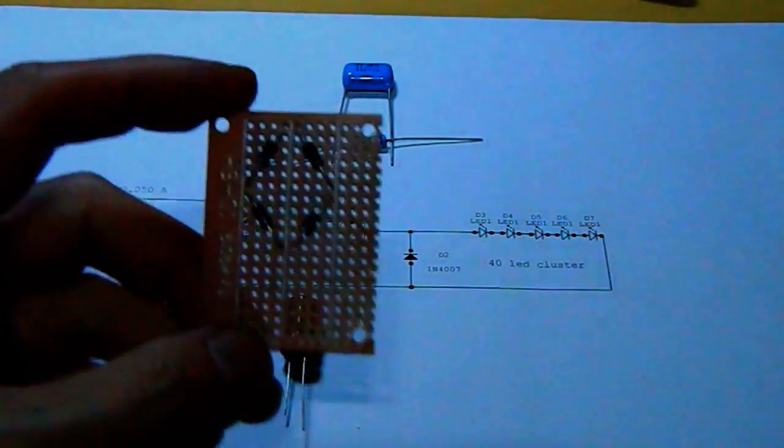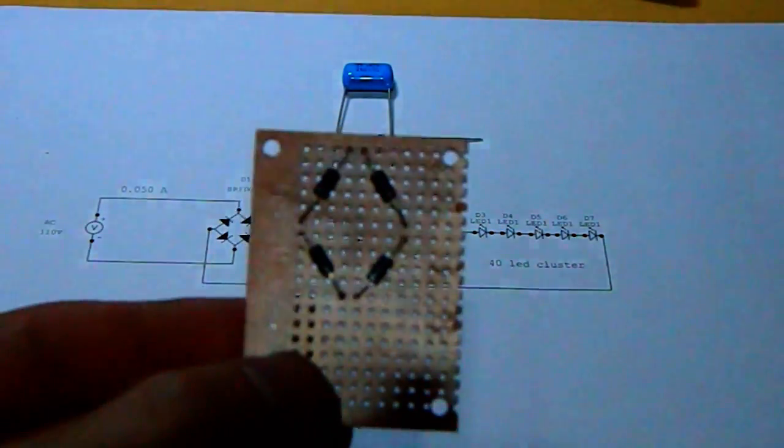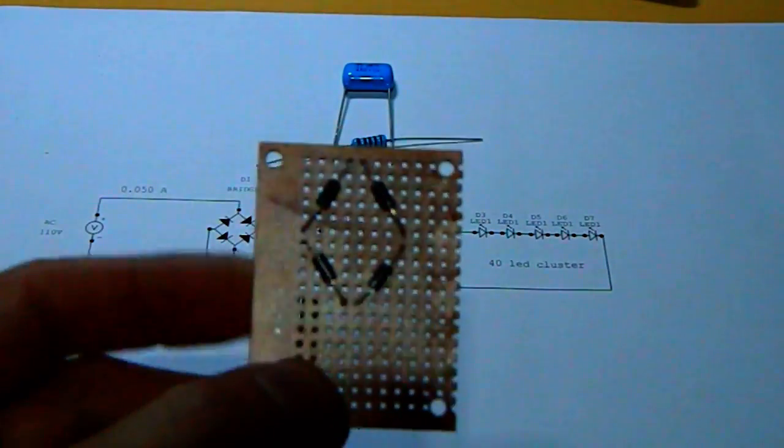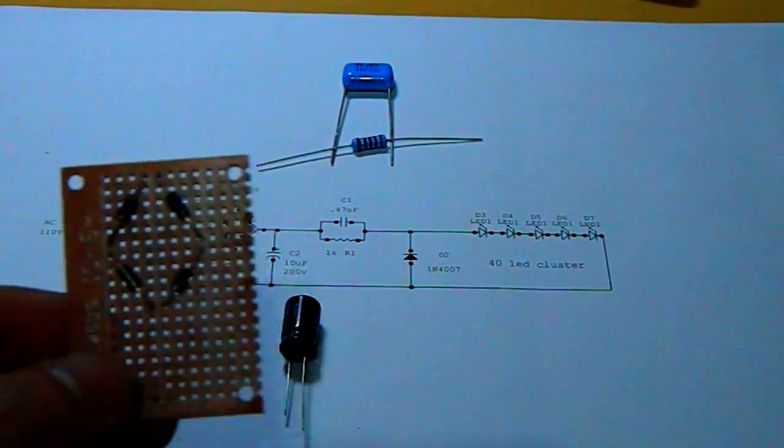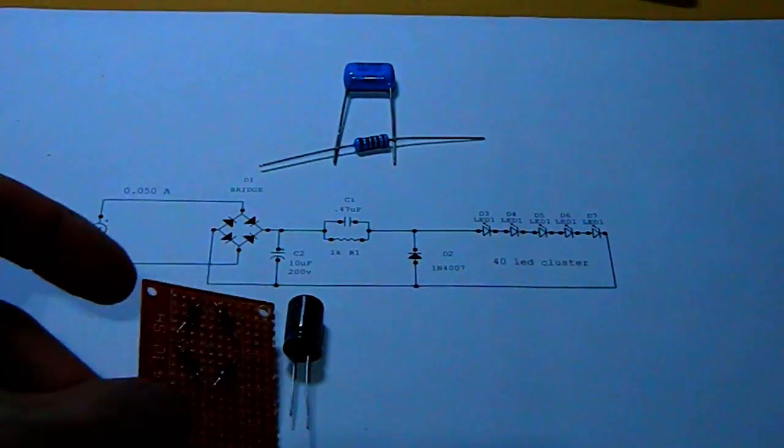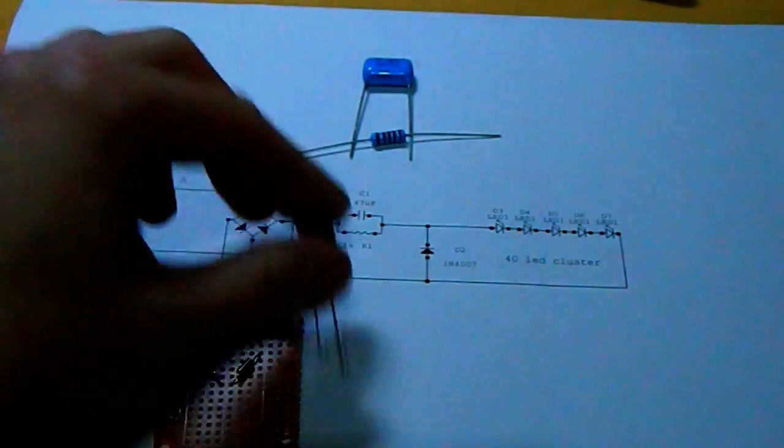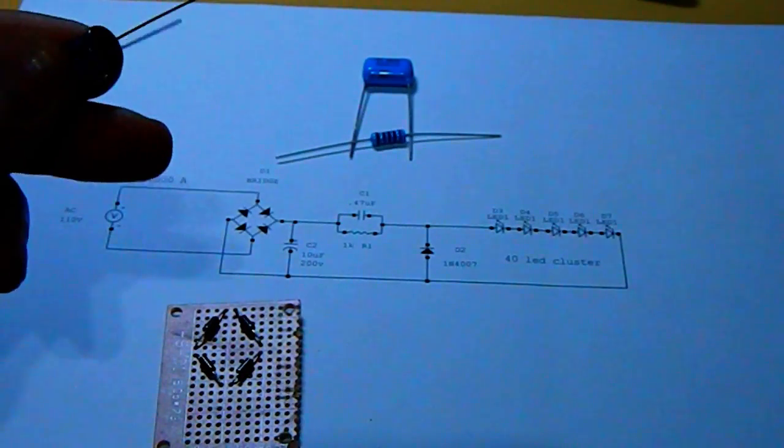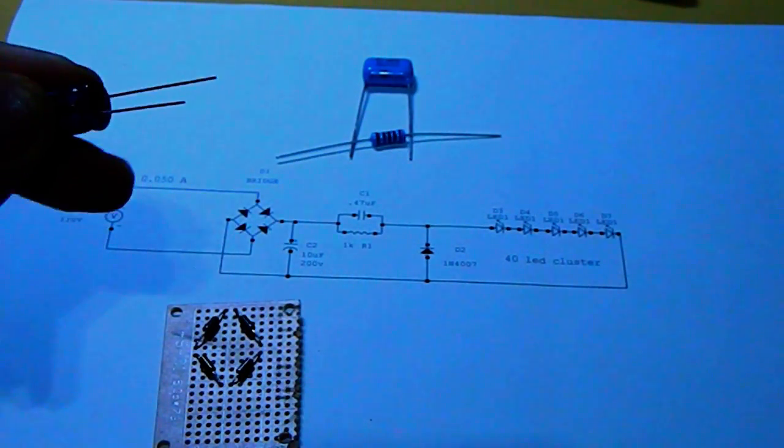After placing the bridge rectifier, the next step is to put the capacitor and solder it.